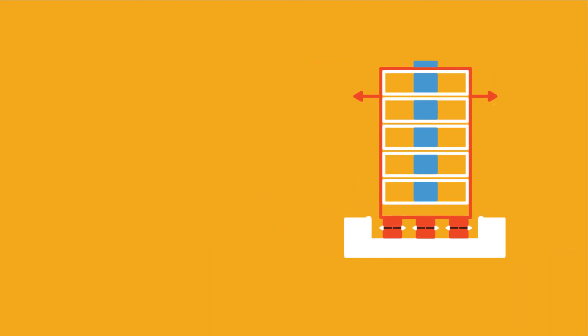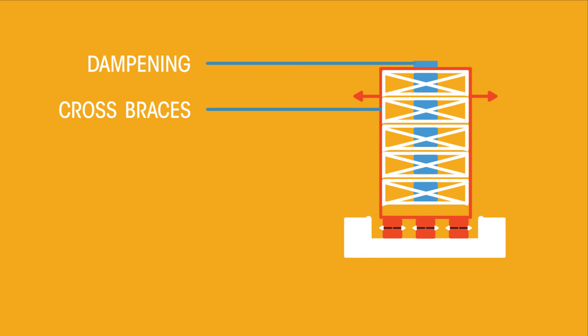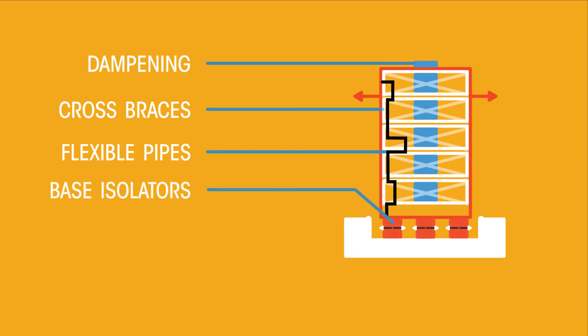Some features of earthquake resistant buildings include mass damper, a weight on top of the roof to detect shaking, cross braces to reinforce floors so they don't collapse, flexible pipes to prevent water and gas leaks, base isolators that act as shock absorbers at the bottom of a building, and active tendon system which is like a mass damper only on the bottom of the building.